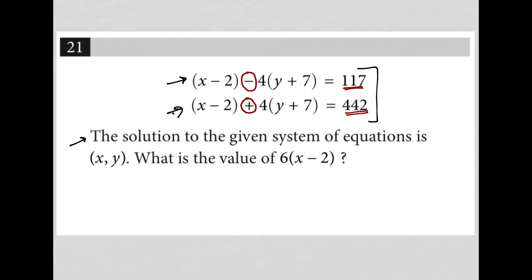Okay, so I think I just want to solve the system of equations for x minus 2. I think that if I were to add these two equations together, I get this term to cross out, a negative 4 times y plus 7 will cross out with a positive 4 times y plus 7.